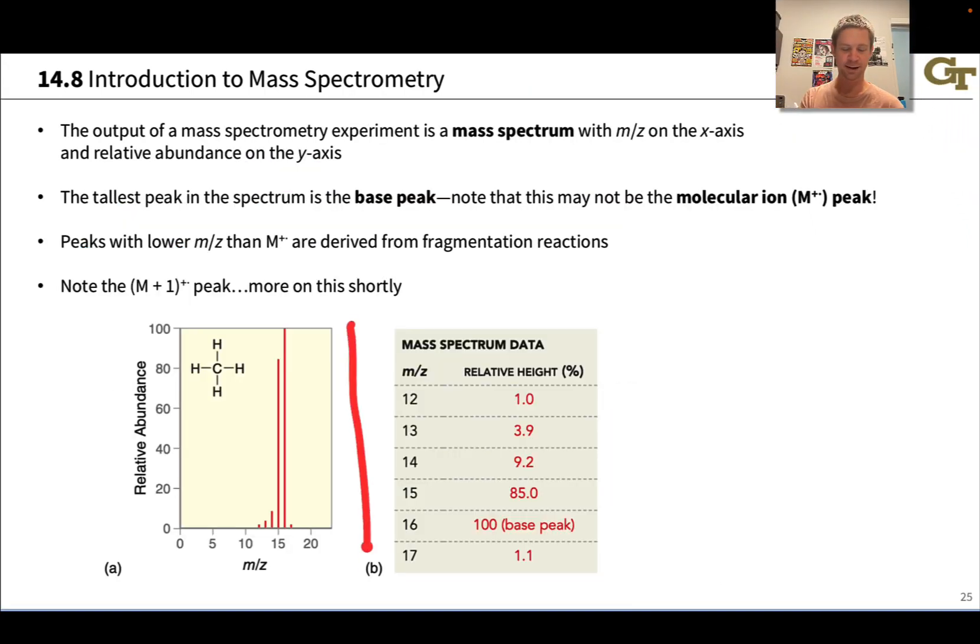A typical mass spectrum for methane is shown here. On the x-axis we have that mass to charge ratio, and on the y-axis we have the relative abundance of ions with those mass to charge ratios. This gives us a sense of the distribution of the masses of ions that come off the sample after ionization and potentially fragmentation.